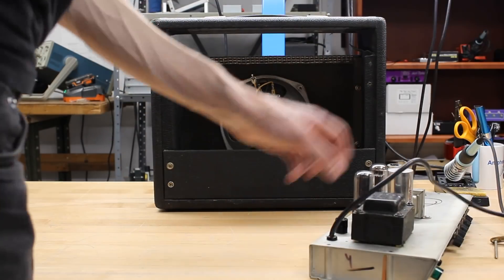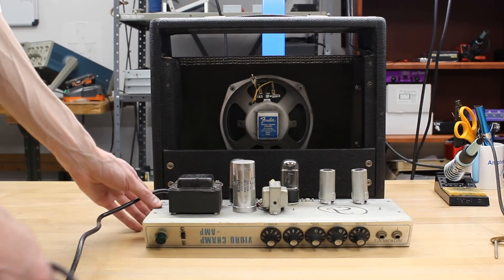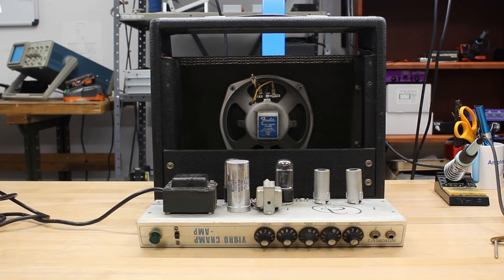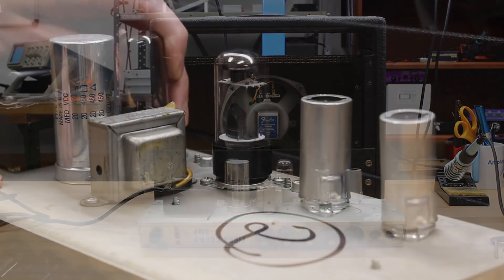We have removed the chassis from the cabinet, and the CAN cap we will be replacing is clearly visible. Now we will want to remove the tubes before working.